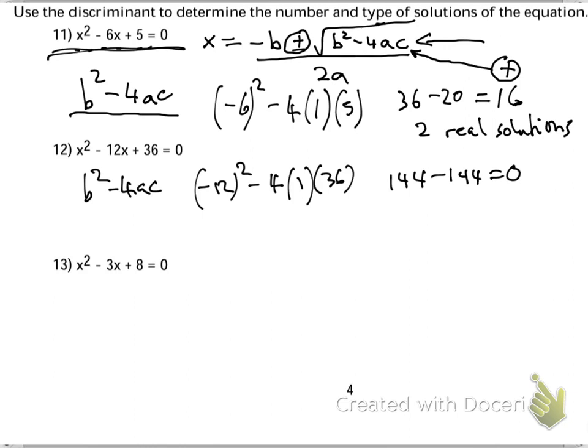Now, if we say plus and minus the square root of 0, that is just one solution of 0. This is one real solution, because if I square root of 0, I'll just get 0. If I say square root of 4, I'll get plus and minus 2, which is 2 real solutions. This is 1 real solution.